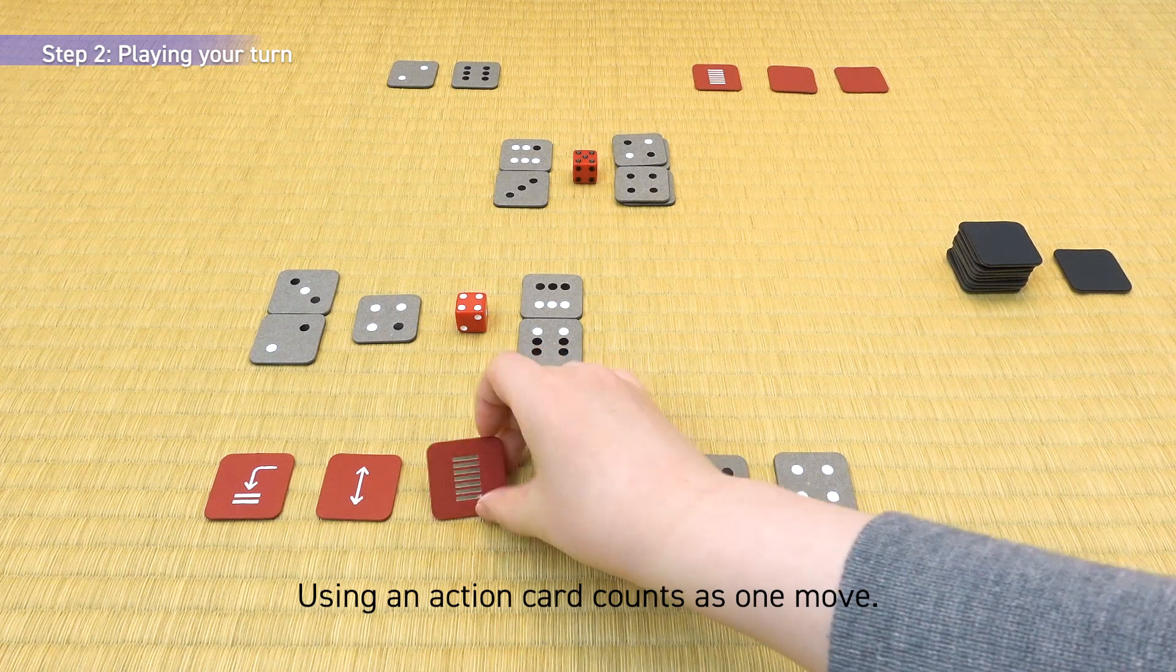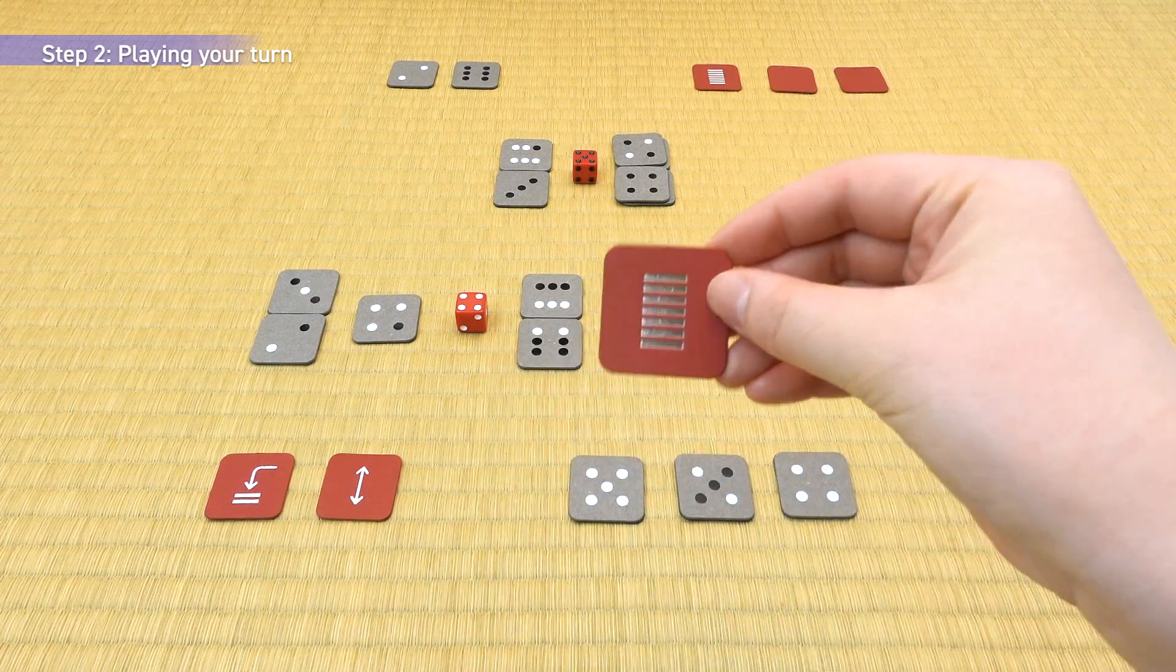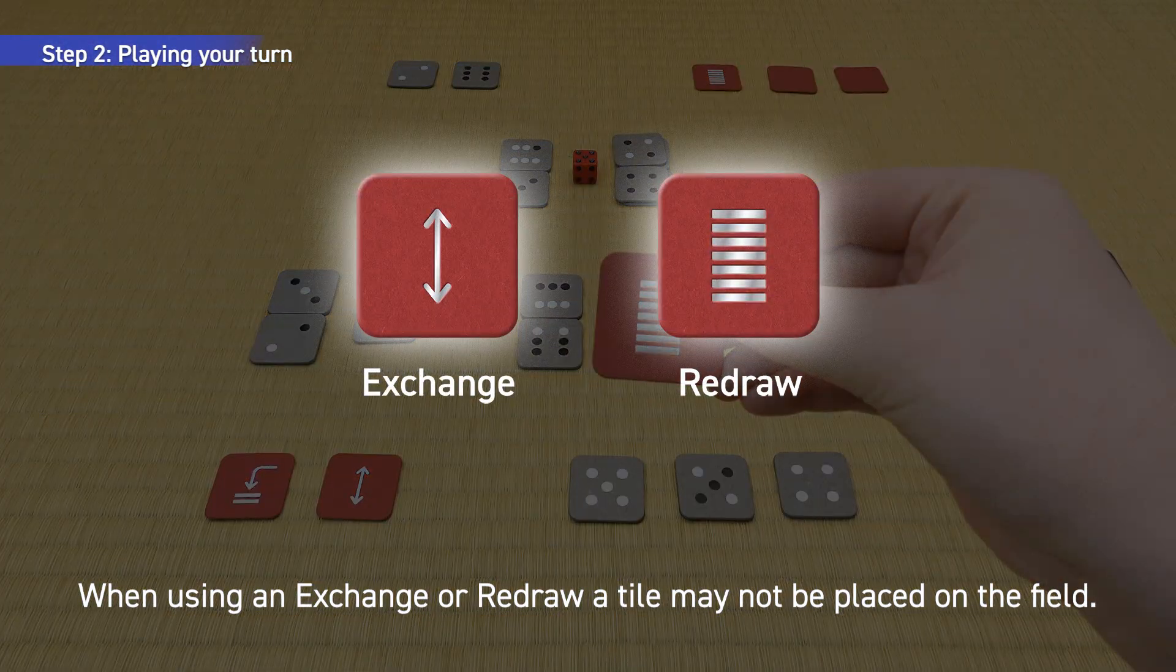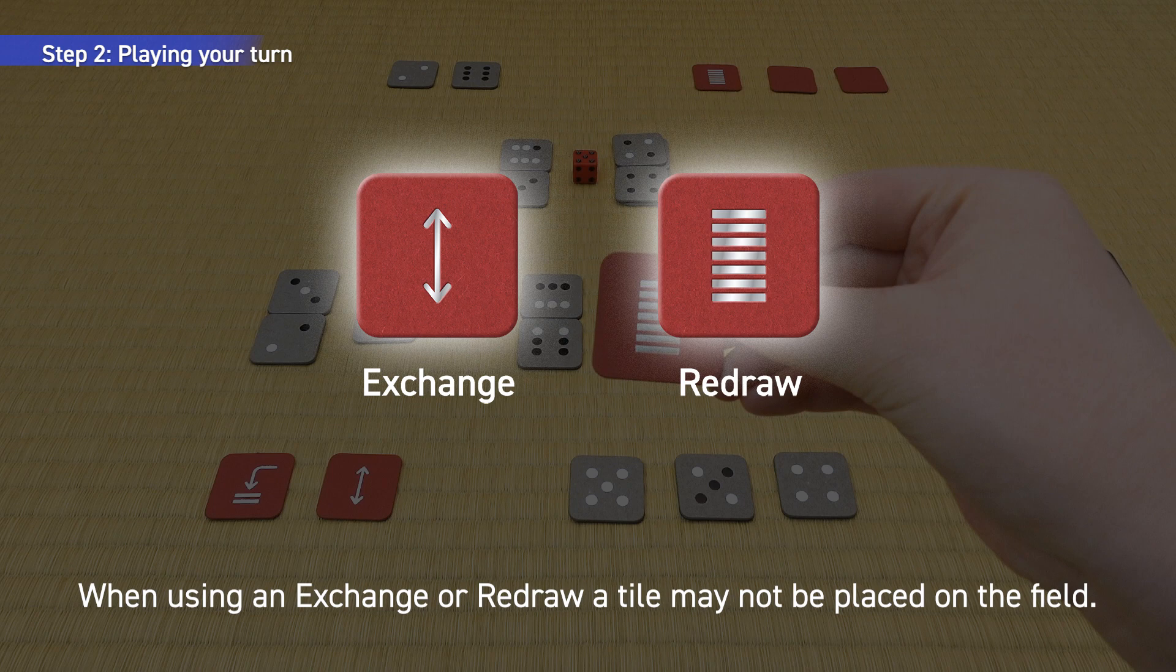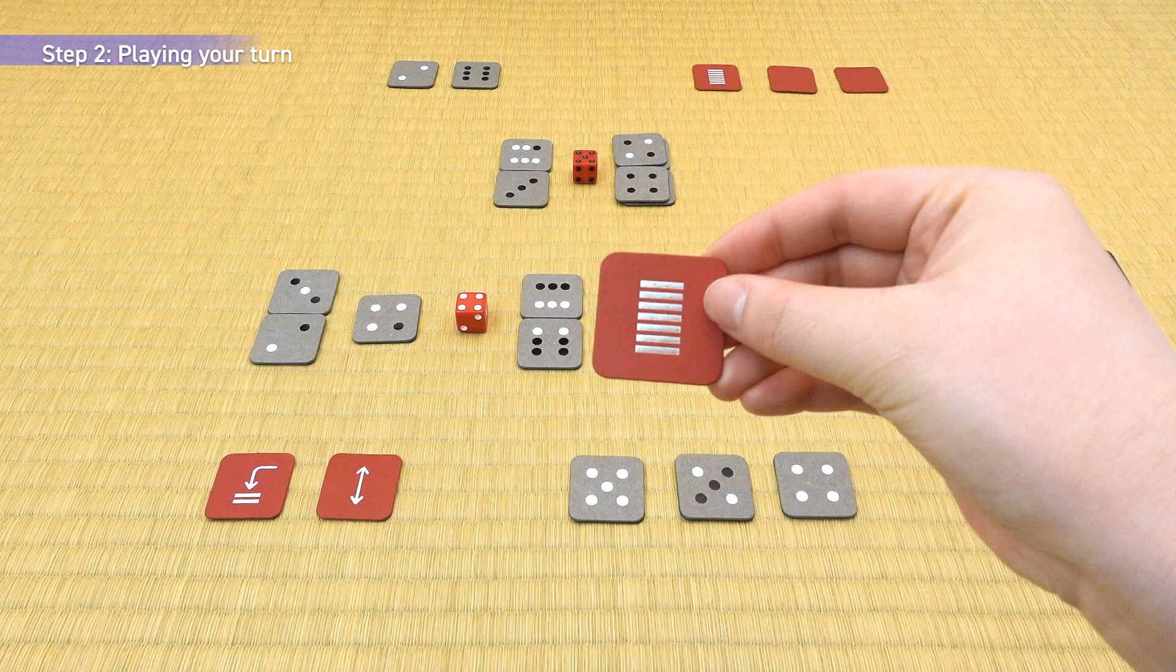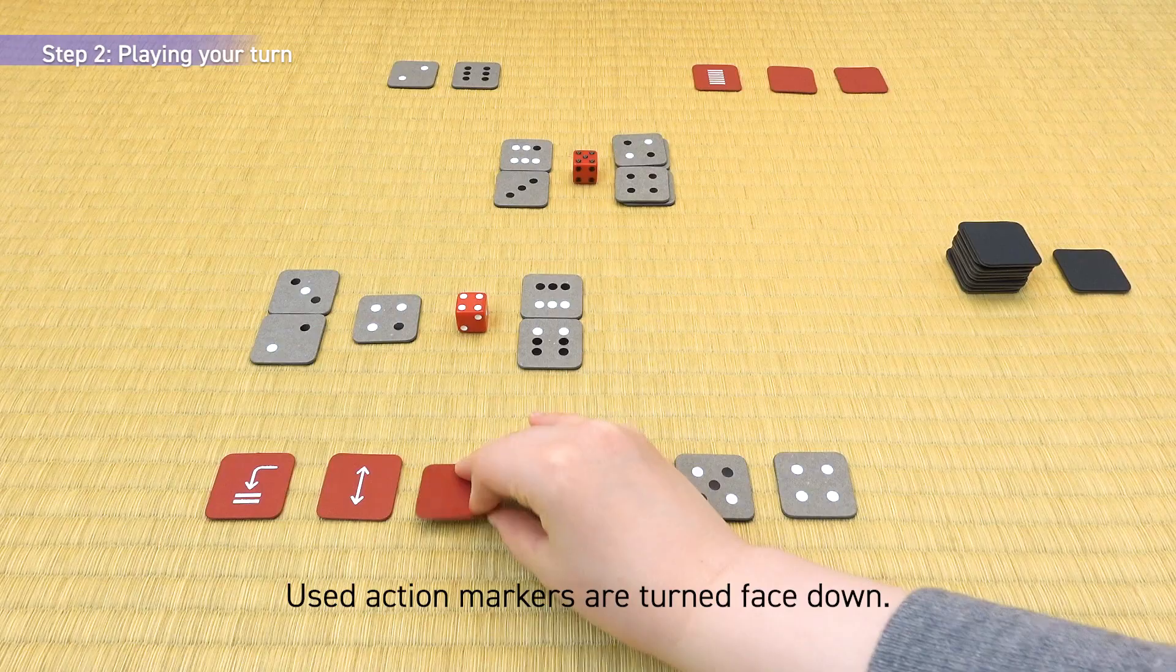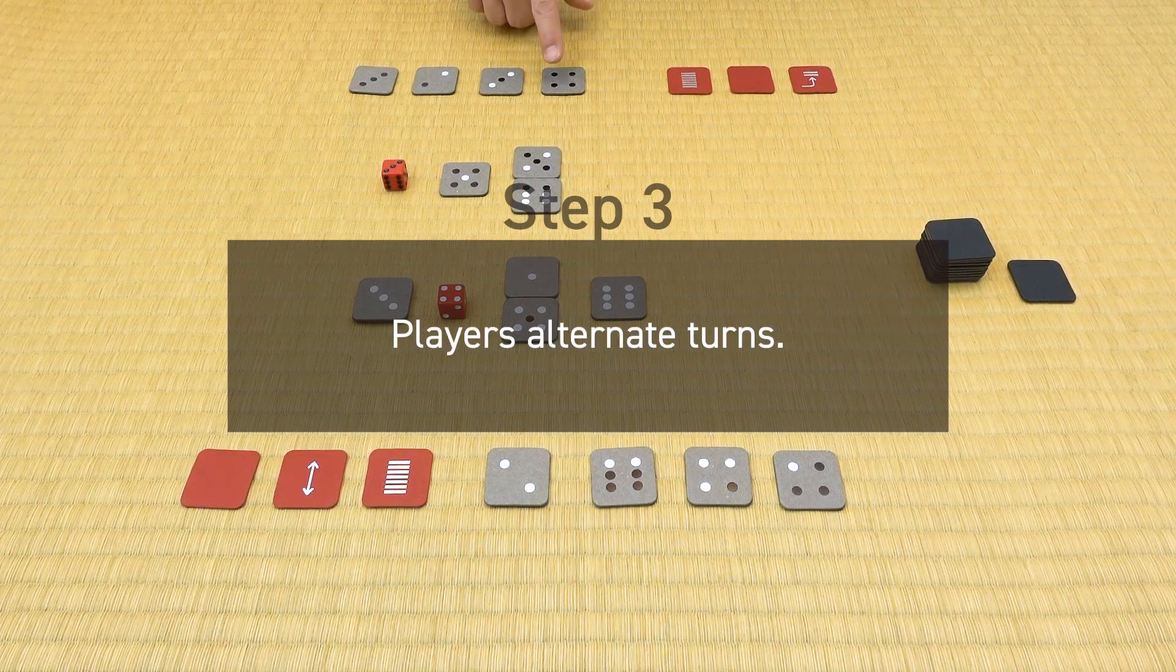Using an action card counts as one move. When using an exchange or redraw, a tile may not be placed on the field. Used action markers are turned face down. Step 3: Players alternate turns.